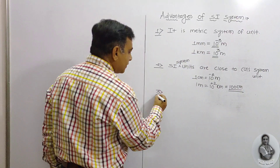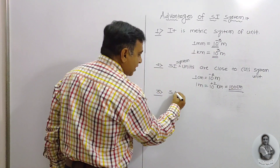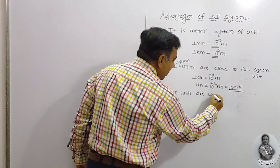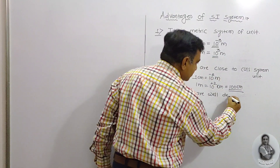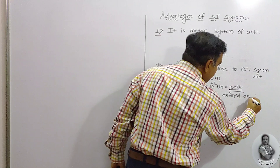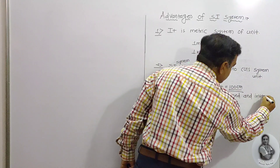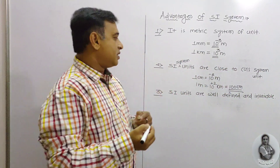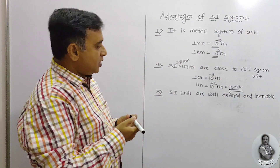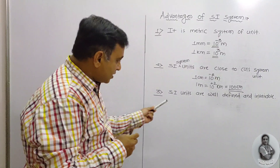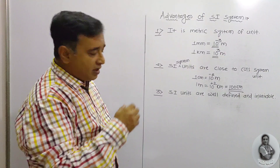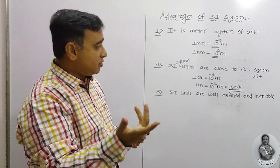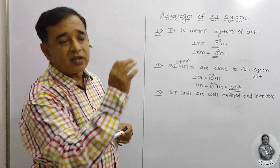The third advantage is that SI units are well defined and invariable. This means that in this system of units, each and every unit can be well defined, and the units never change. Because the units do not change, they are called invariable.